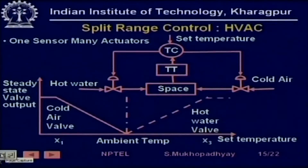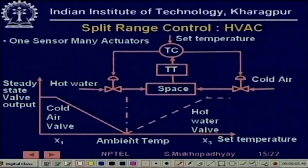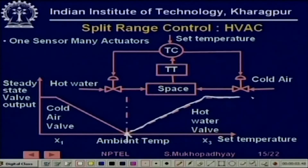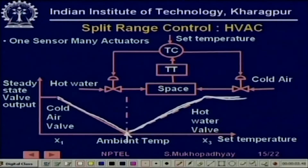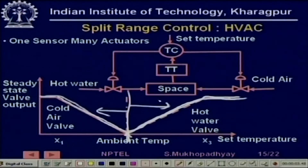When the set temperature is greater than ambient temperature, you use the hot water actuator, and as the error increases the hot water valve gradually gets opened. The overall control input to the process rises gradually and then becomes stable. Similarly, when the set temperature is below ambient temperature, the cold water valve characteristic is followed. The overall control input characteristic spans the two ranges — in one range you operate the cold water valve and in the other range you operate the hot water valve. This is the standard HVAC control of spaces, which is why it is called split range control — the range is split into two different control modes.